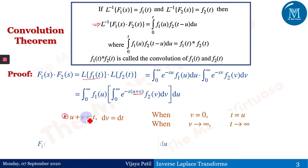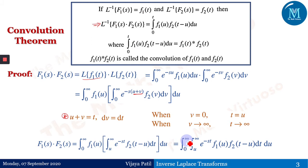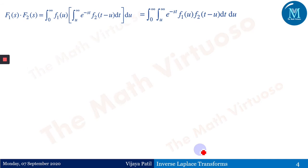Therefore F1(s)·F2(s) becomes the integral from 0 to infinity of f1(u) times the integral from u to infinity of e^(−st)·f2(t−u) dt du. So we have a double integral where the inner integral is in t from u to infinity, and the outer integral is in u from 0 to infinity.